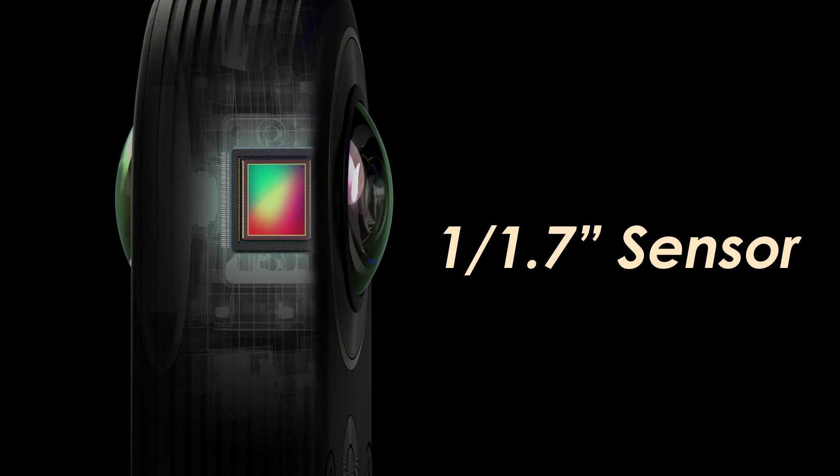One cool feature of the Kandao Qoocam 8K is that it uses a folded optical path lens, kind of like the Theta Z1. You can see from their diagram that the sensors are placed on the side rather than on the axis of the lens. The benefit of this is that you can move the lenses closer together, reducing parallax stitching error — in other words, you'll get smoother stitching.